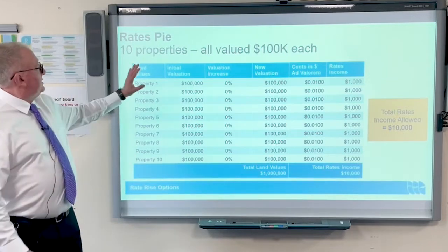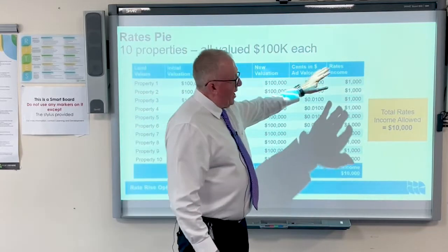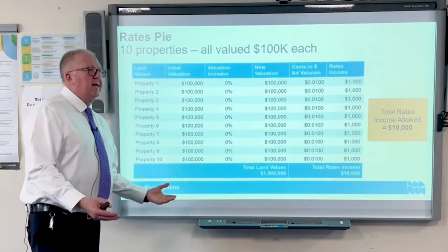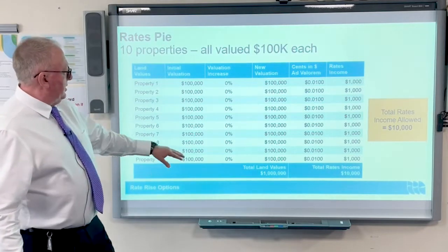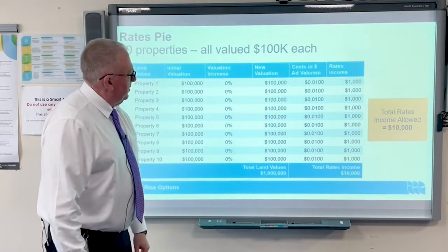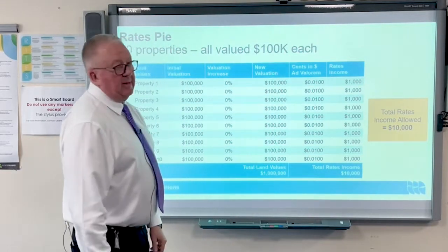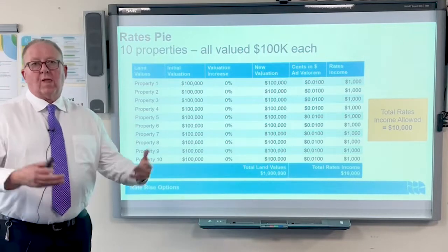The first slide, just to set the scene — we're using an example of 10 properties all valued at $100,000. Our total rates that we're allowed to levy is $10,000, so simply $10,000 divided by the 10 properties gives us a rate of $1,000 per property. The total land value is $1,000,000; you divide that into the rates income to provide the cents in the dollar that will apply to your rates.